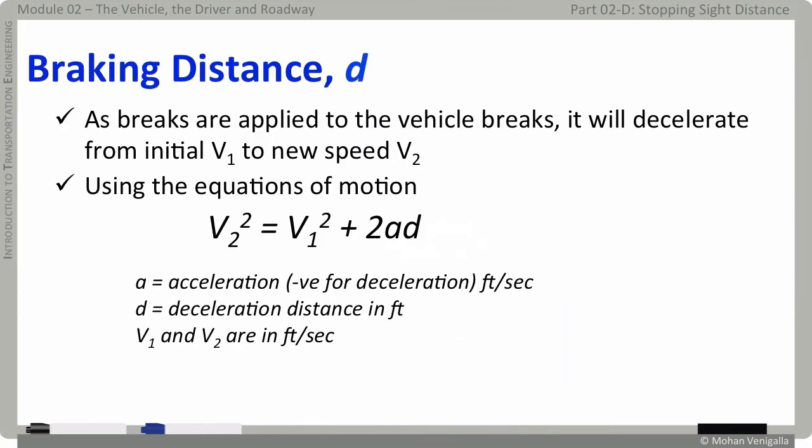Once the driver applies brakes, the vehicle will decelerate from initial speed of v1 to new speed of v2. Using the equations of motion, we have v2 squared equals v1 squared plus 2ad where a is acceleration.